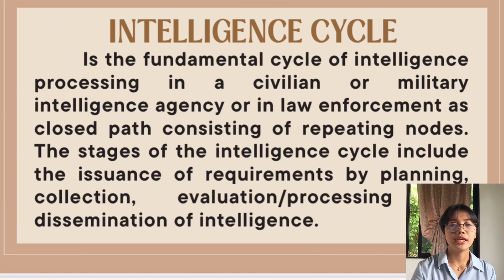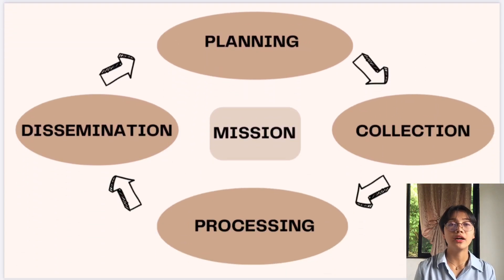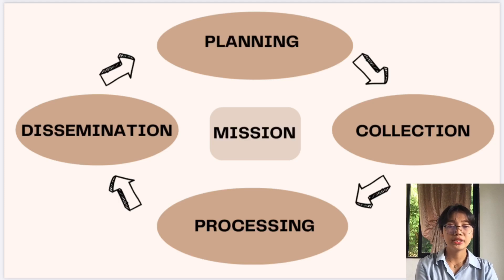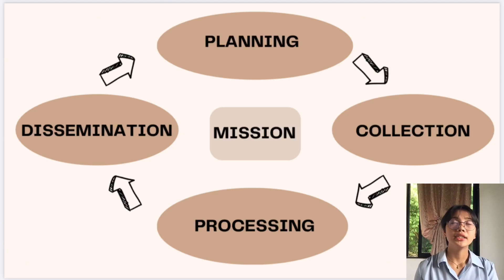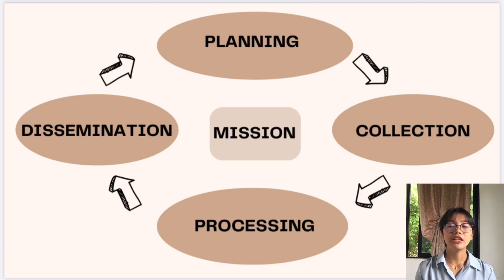Here is the process of the intelligence cycle. First is planning, second is collection, third is processing, and the last is dissemination. In the planning stage, they identify intelligence requirements and priorities, determine the scope of collection efforts, and set objectives and goals for the intelligence process — involving resource allocation and tasking of collection assets.